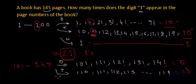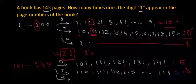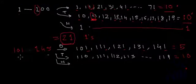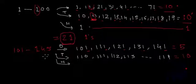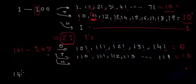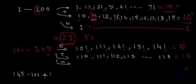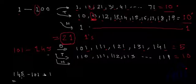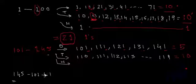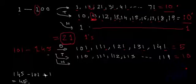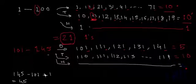Now let's talk about the 1s at the hundreds place. Every page number from 101 to 145 has a 1 at the hundreds place. So let's count how many pages there are from 101 to 145: 145 minus 101 plus 1 gives us 45. So there will be a total of 45 ones at the hundreds place.